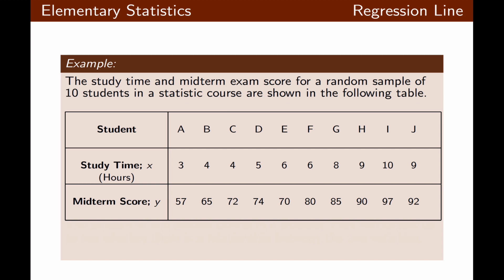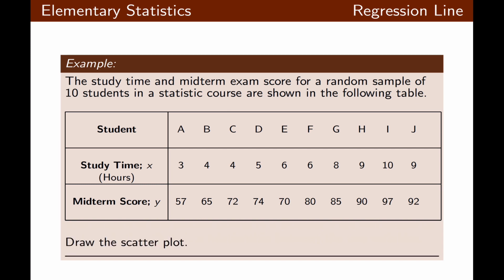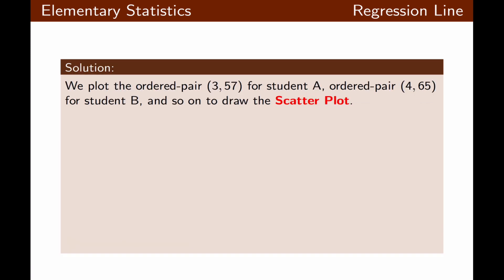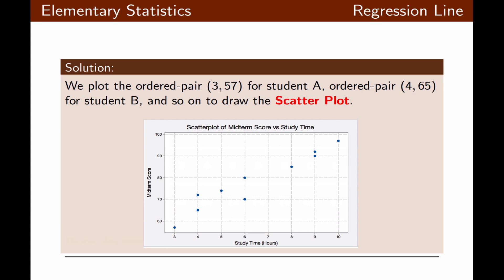Let's look at this example. The study time and the midterm exam scores of a random sample of ten students are given below. We want to draw the scatter plot. We're basically going to plot the ordered pairs per student — so 3 and 57 for student A, 4 and 65 for student B, and so on. The final scatter plot will use study time for x and midterm score for y.